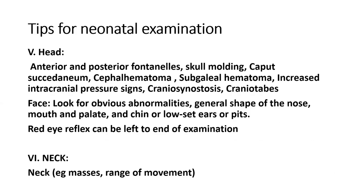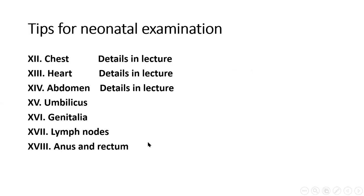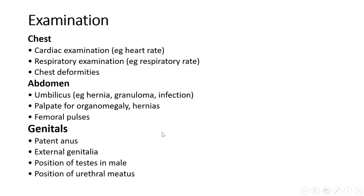Facial examination continues with the ears — preauricular tags or sinuses — and assessment of the red eye reflex, where absent reflex unilaterally or bilaterally may indicate cataract. We examine the neck for masses and range of movement. Detailed examination of the chest, heart, abdomen, lymph nodes, anus, and rectum follow as described in the main lecture.